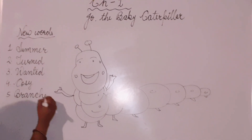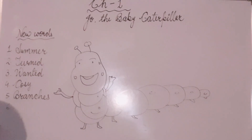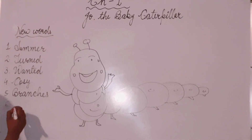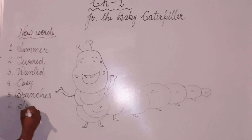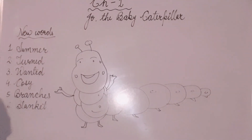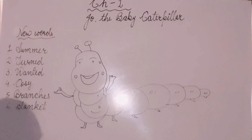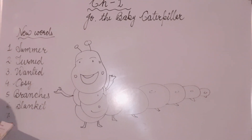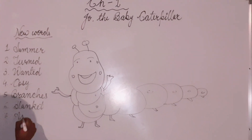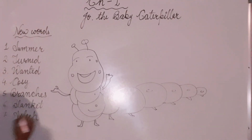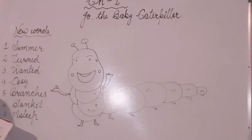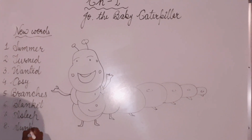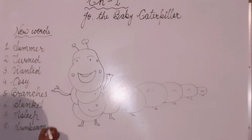The fifth word is branches — branches means shaak, the branches of a tree. The sixth word is blanket — blanket hota hai ek kambal, a covering to keep warm. The seventh word is asleep — asleep means so jana, to fall asleep. The eighth word is sunbeam — sunbeam means sooraj ki kirne, rays of the sun.